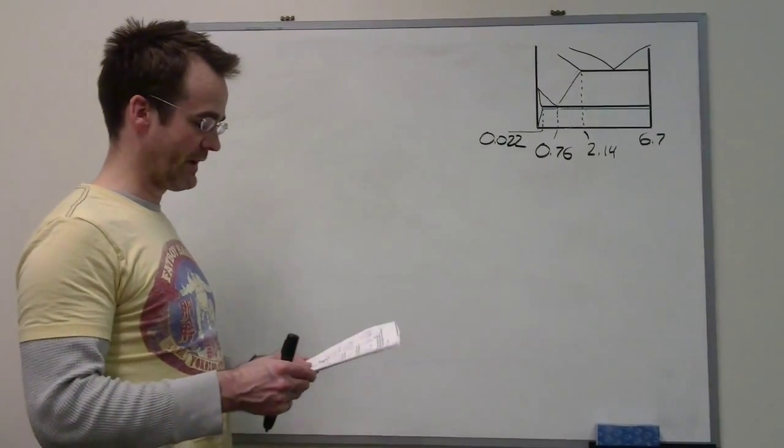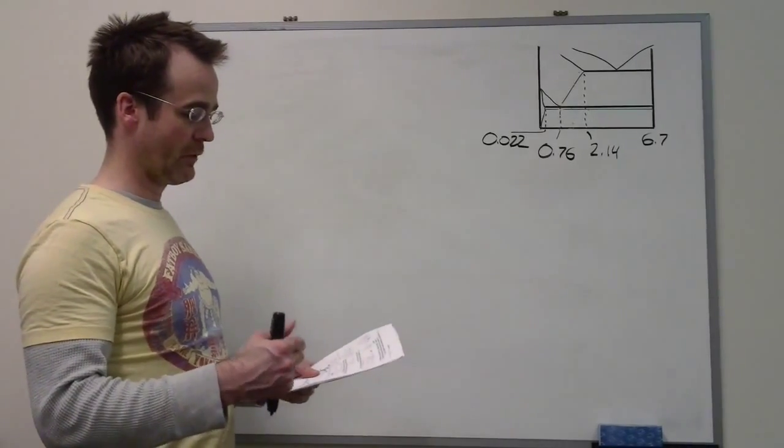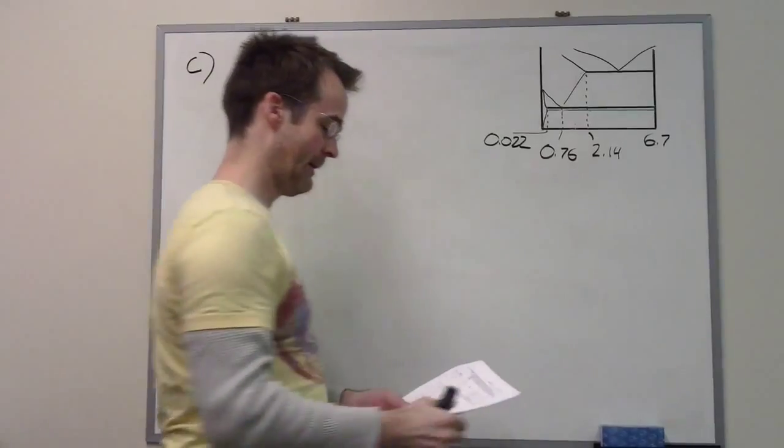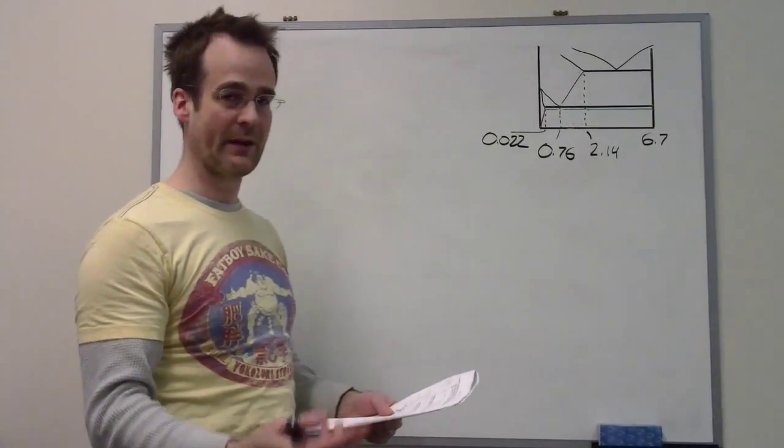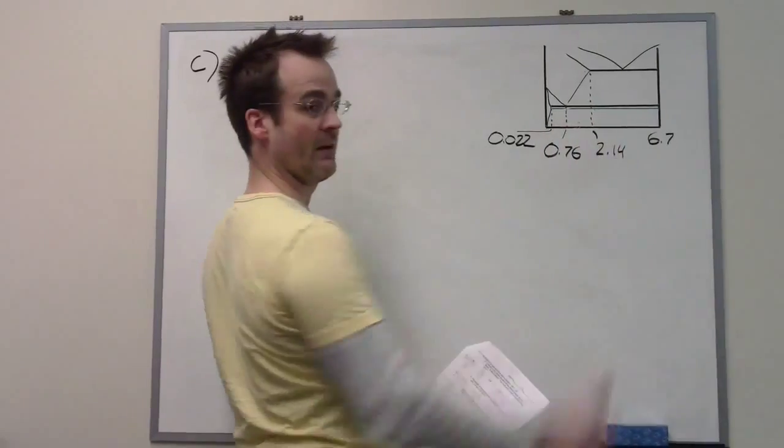Part C just says to ignore the information in Part A - that means ignoring the specific composition we calculated in Part A - and just knowing that it's a hyper-eutectoid steel, so it's between 0.76 and 2.14.